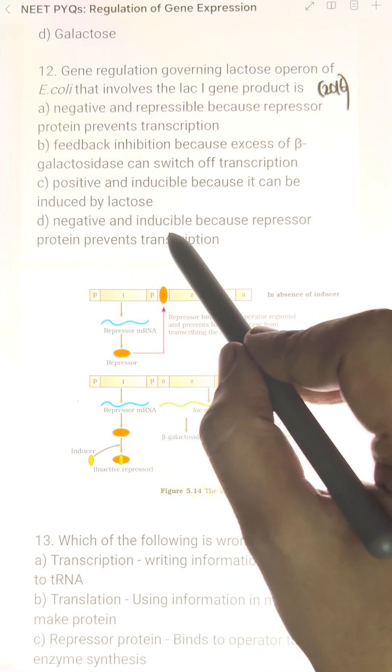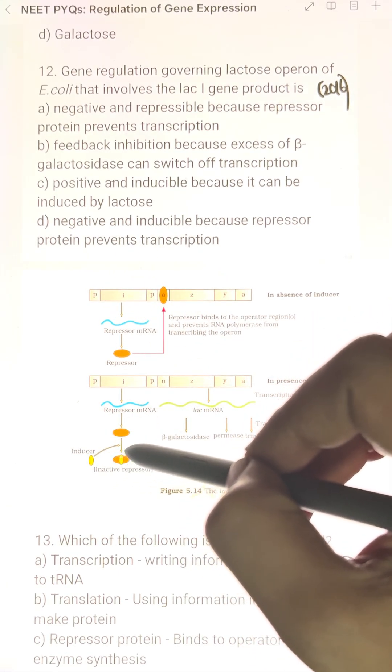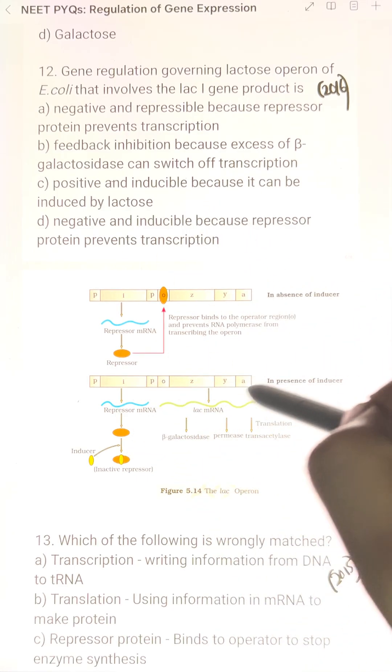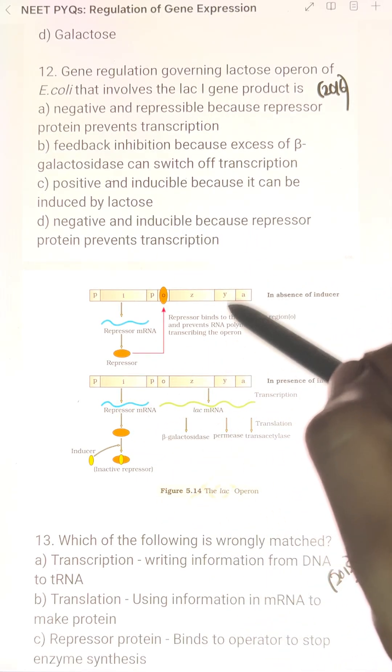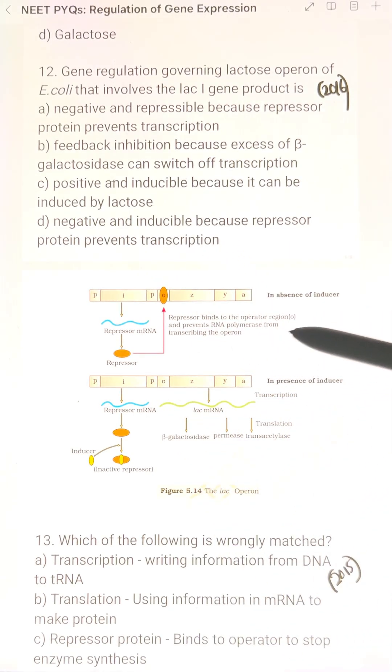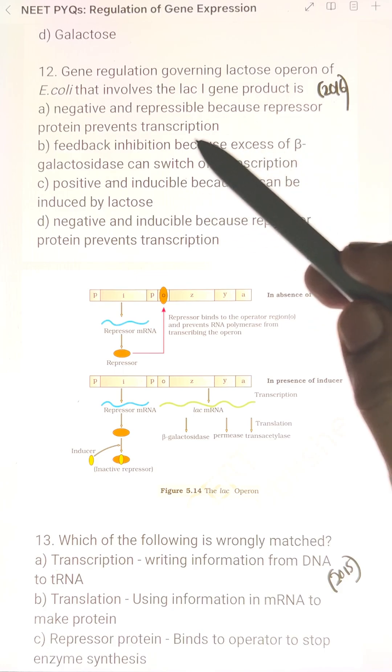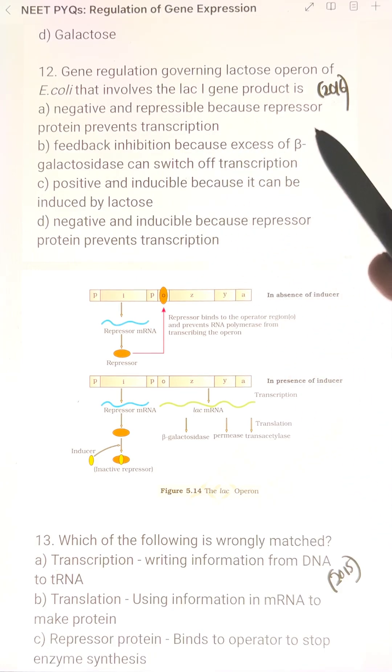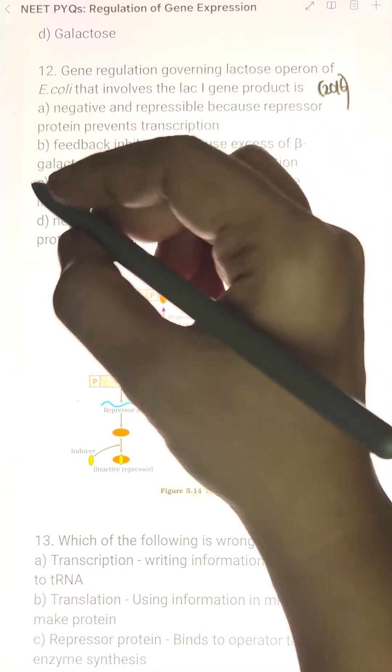It is a negative regulation and inducible. Lactose in the lac operon, it is inducible because repressor protein prevents transcription. The answer is it is a negative regulation and inducible because repressor protein prevents transcription.